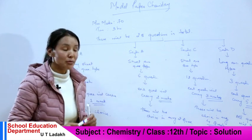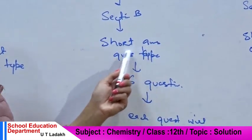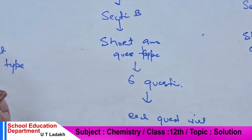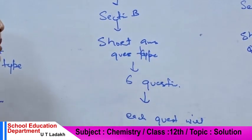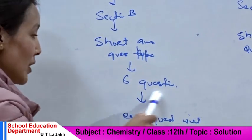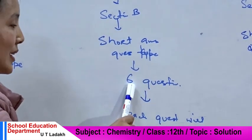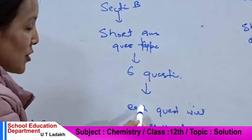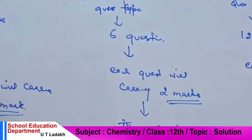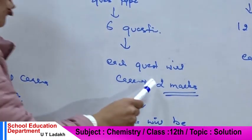The next section is Section B, which is a short answer question type. We have six questions again, and each question has two marks.